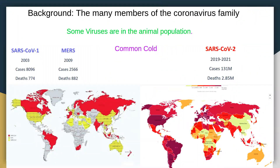As we all have gotten an impromptu virology education during the pandemic, you may know that coronaviruses are quite a large family of respiratory viruses. Some are only found in animal populations, some members cause the common cold. Then the more dangerous SARS-CoV-1, which emerged in 2003, caused over 8,000 infections, of which 775 people died. Luckily, at that time, we were able to contain this pandemic relatively quickly.